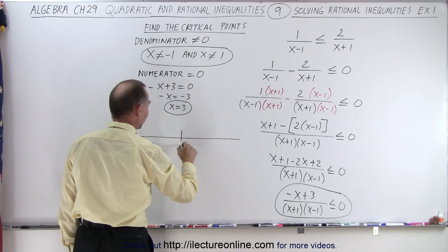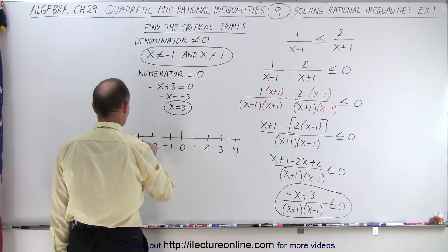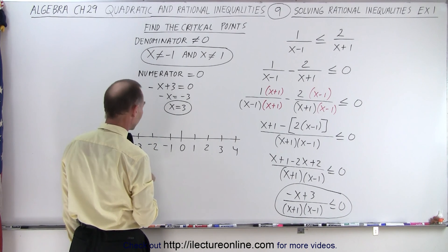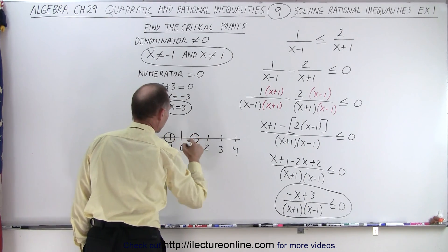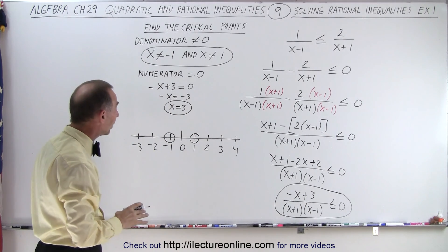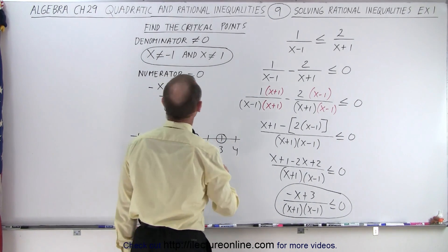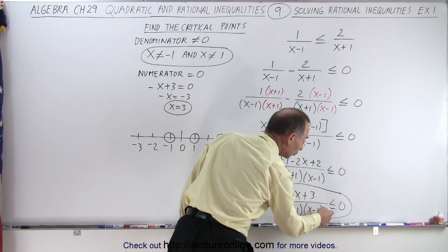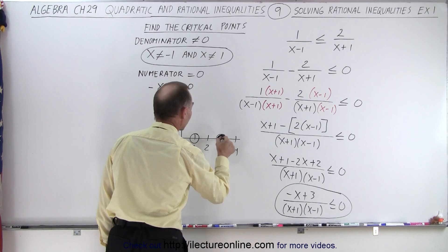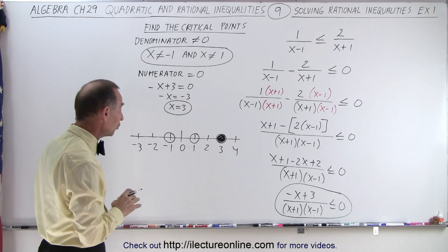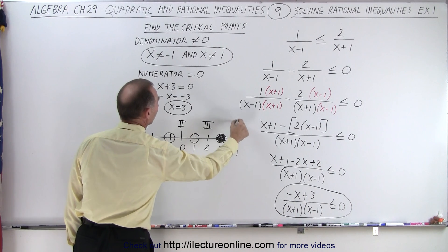Let's place those points on the number line: negative three, negative two, negative one, zero, one, two, three, four. We draw an open circle at x equals negative one — it's never filled in because x cannot equal negative one. Open circle at x equals one for the same reason. At x equals three, since the inequality is less than or equal to, the equal sign means three is included, so we darken that circle. With three critical points we have four regions.